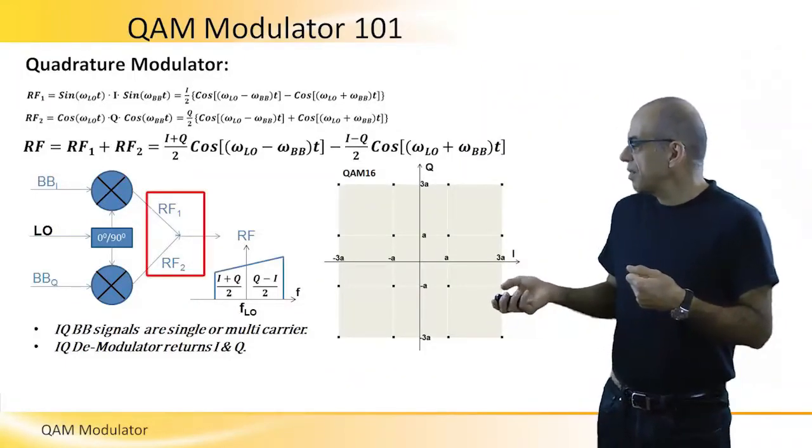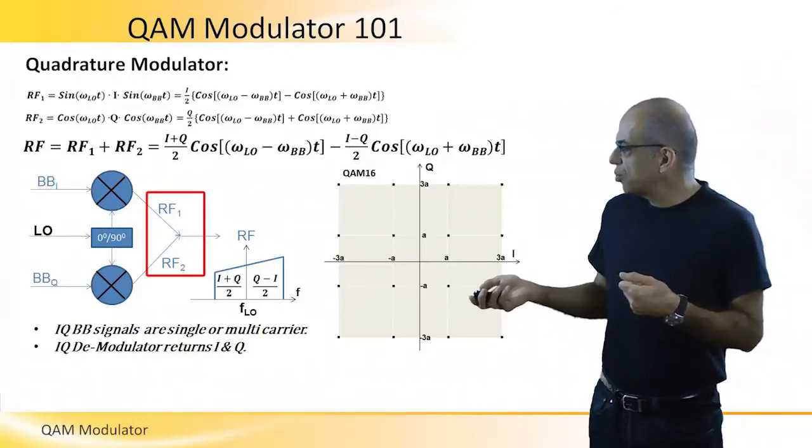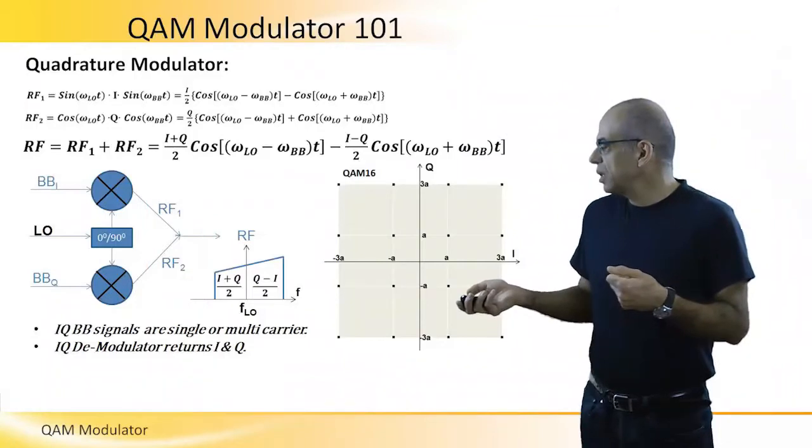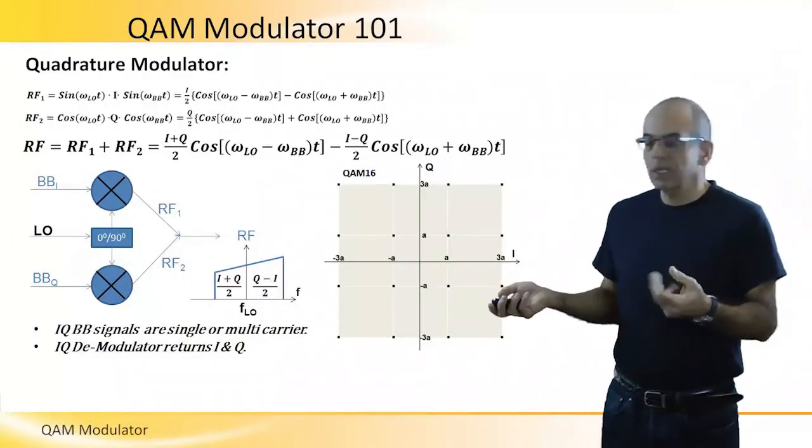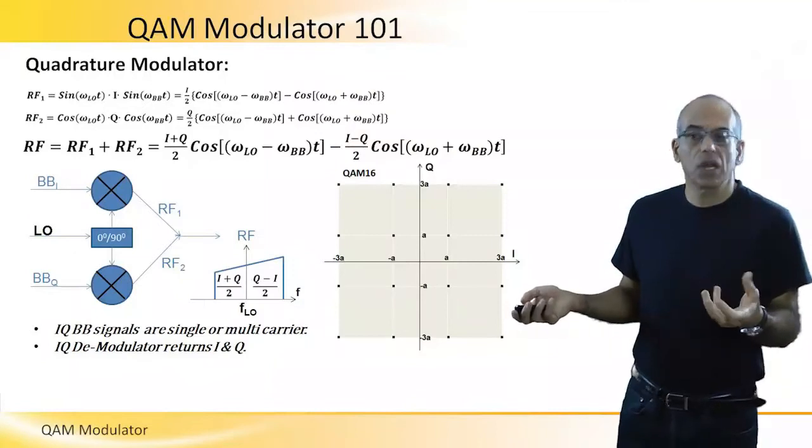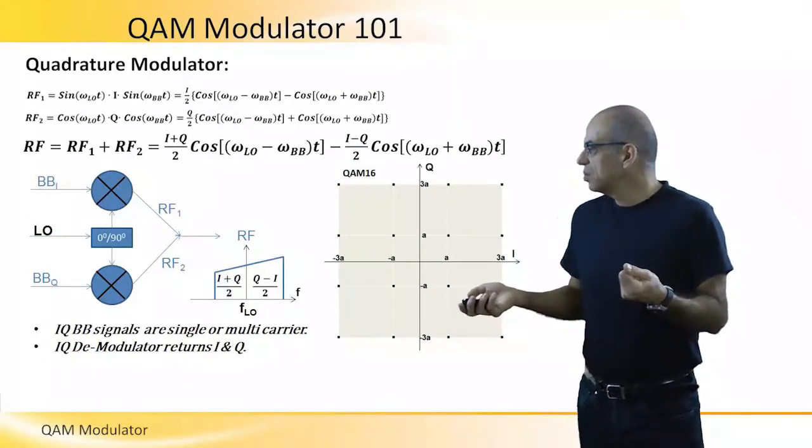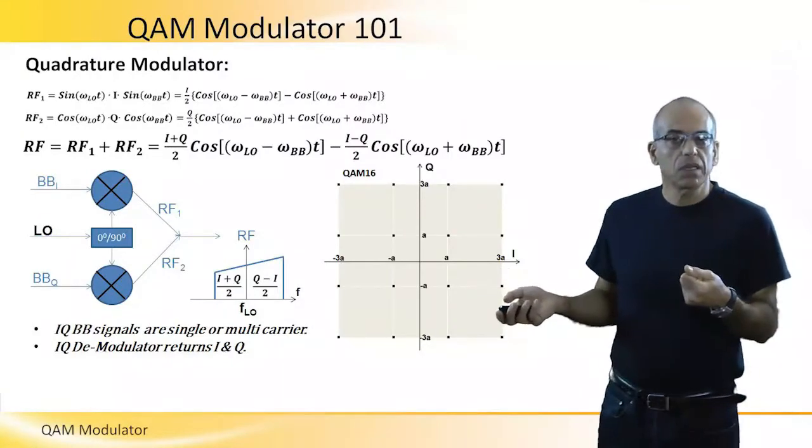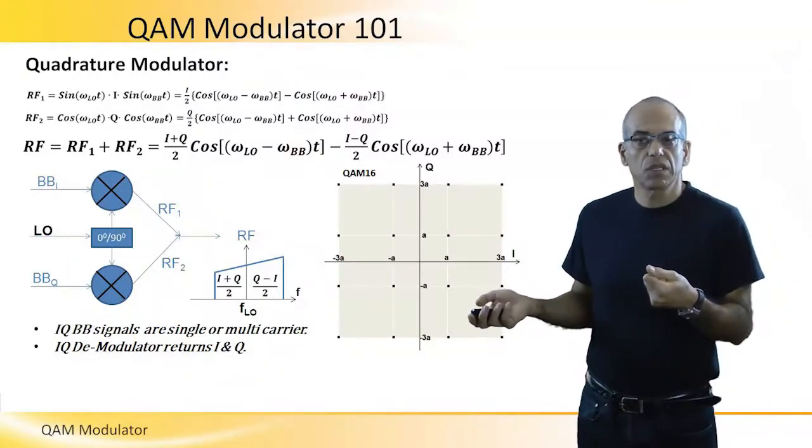Then we have two outputs for the two mixers, RF1 and RF2, that we can combine to see the total RF signal. If we do the trigonometric calculations, it is very simple to show that we take a single sideband baseband signal.